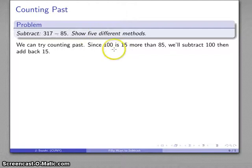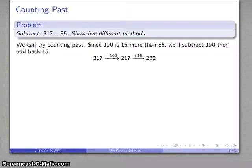Well, 100 is a convenient benchmark number that's a little bit more than 85. So I will subtract too much, and then I'll return what I shouldn't have subtracted. So I'm going to start at 317. I'll take away 100. That's too much. Got to return 15. That takes us back to 232.